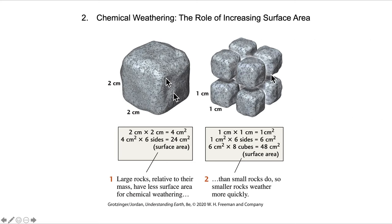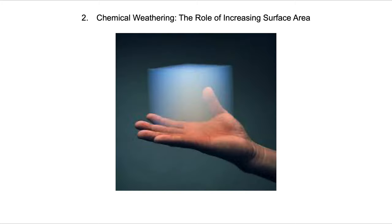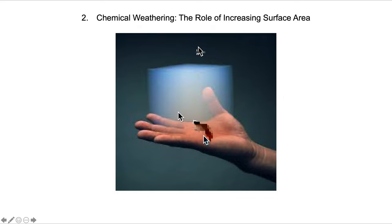Surface area plays a role as well. A 2x2 cm cube of granite has a surface area of 24 square centimeters. If we break it into eight smaller cubes, we double the surface area to 48 square centimeters. Large rocks have less surface area relative to their mass and thus less exposure to fluids. Small rocks have a significantly greater surface area to volume ratio and weather more quickly. In an extreme case, aerogel — made of silica — weighing about five grams has a surface area roughly the size of a football field, making it fireproof, waterproof, and an excellent insulator.